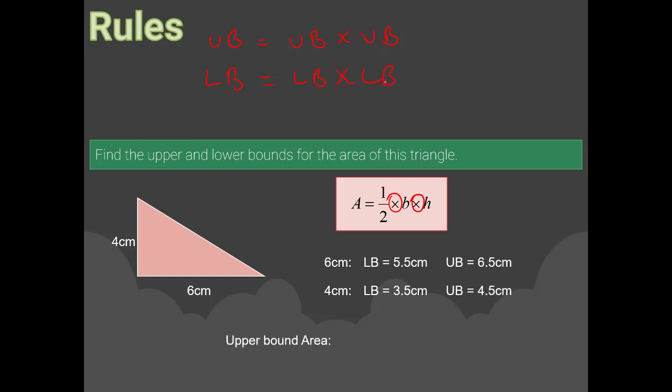The upper bound area is: ½ × 6.5 × 4.5 = 14.625 cm². The lower bound area is: ½ × 5.5 × 3.5 = 9.625 cm². So the upper bound area is 14.625 cm² and the lower bound area is 9.625 cm².